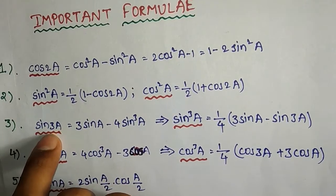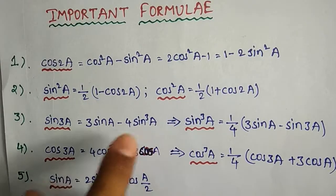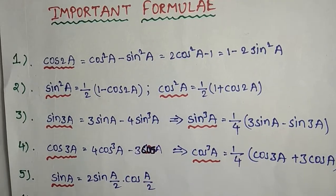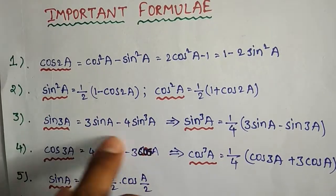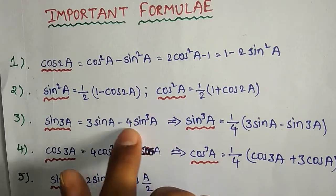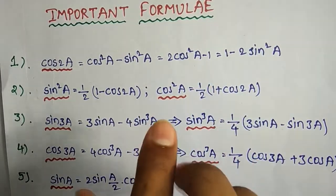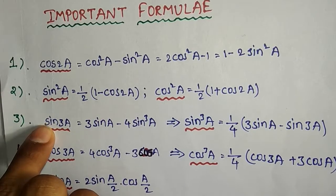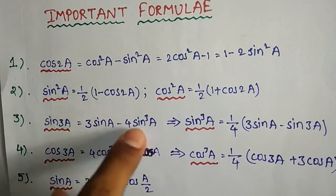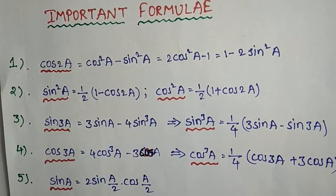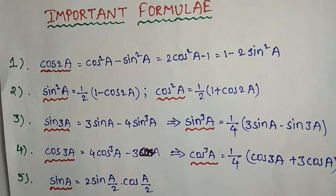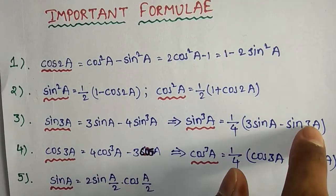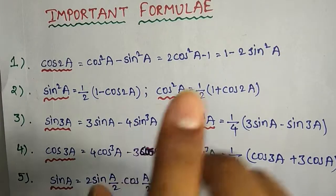sin3a equals 3sina minus 4sin³a. This is the sin³a formula. So 4sin³a equals 3sina minus sin3a.